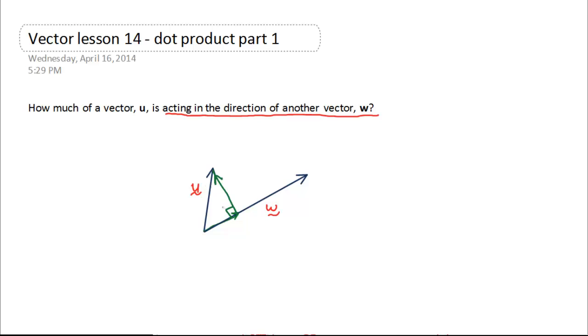So, vector u is made up of two vectors, one acting in the direction of w, and the other acting in the direction perpendicular to w. So, what I'm trying to find is this distance here, right, that's what the question is saying. How much of vector u is acting in the direction of w? So, I'm trying to find this distance.